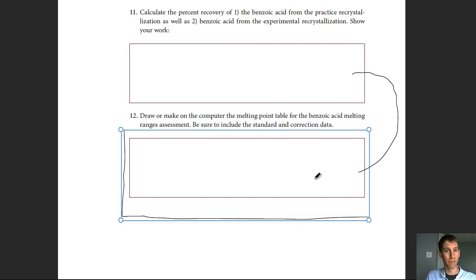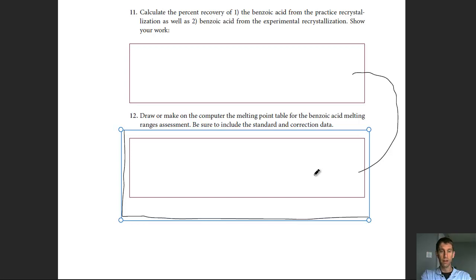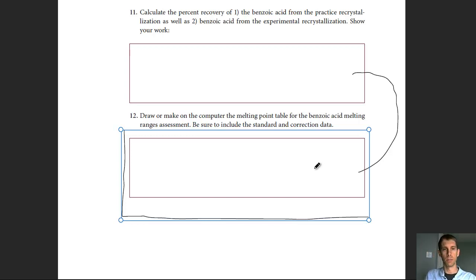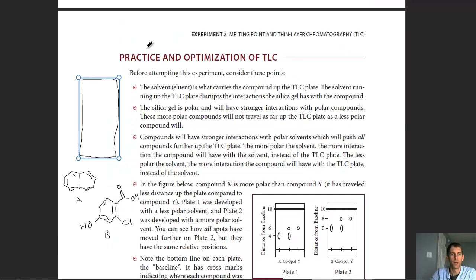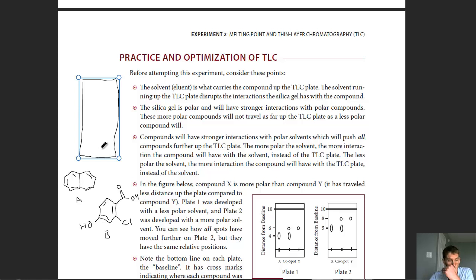For percent recovery, take the recovered mass divided by the initial weight of the original impure sample, then multiply by 100% to get your percent recovery. Now let's talk about the practice and optimization of a TLC plate. For a TLC plate, the goal is to spot the compounds you want to analyze and then see how far they run up the plate.